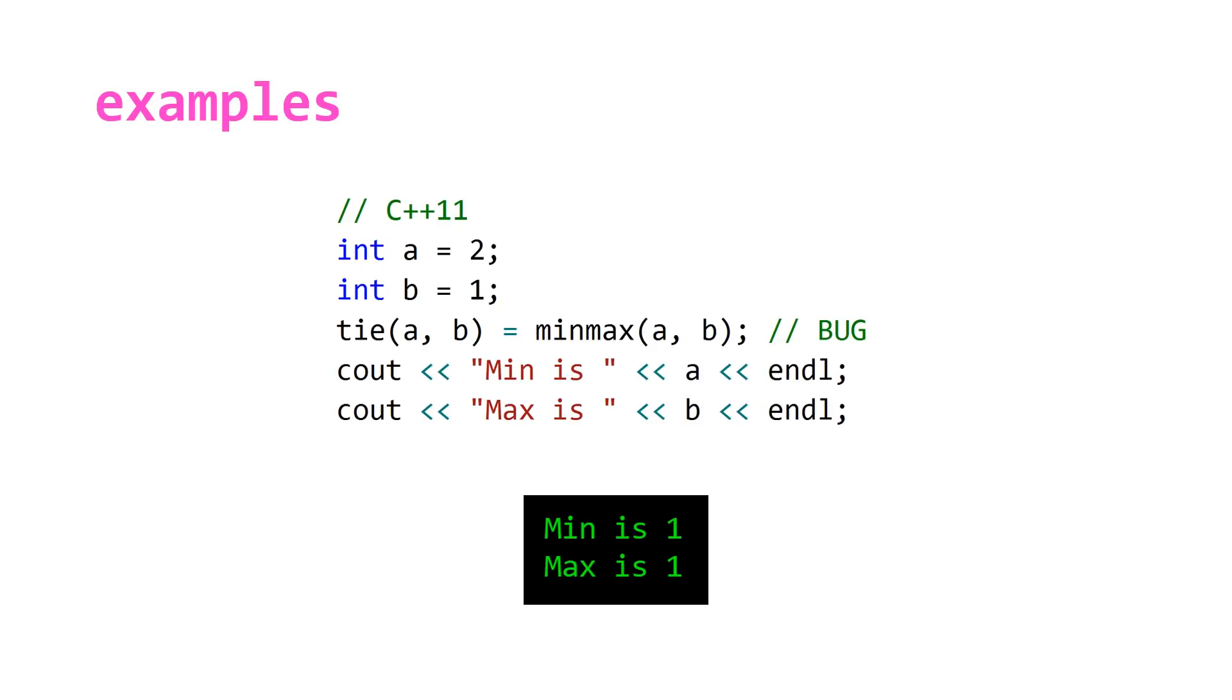The bug is that tie creates a tuple of L value references to what you pass it, and because minmax also returns a pair of references, effectively the a and b here are pointing to the same piece of memory.